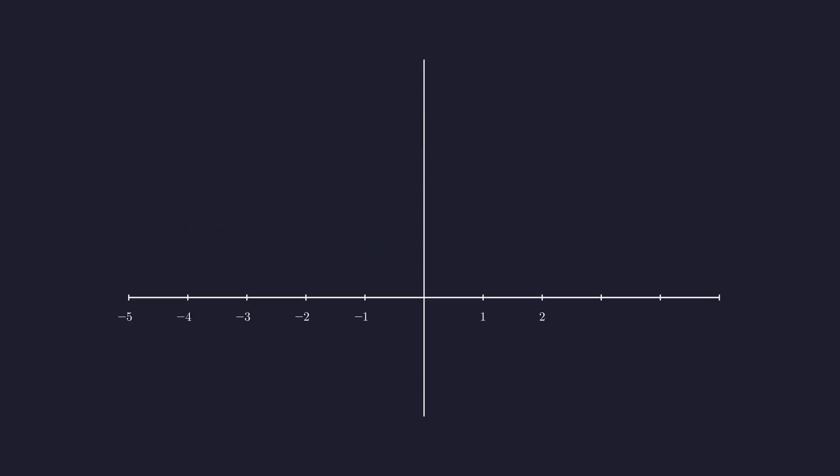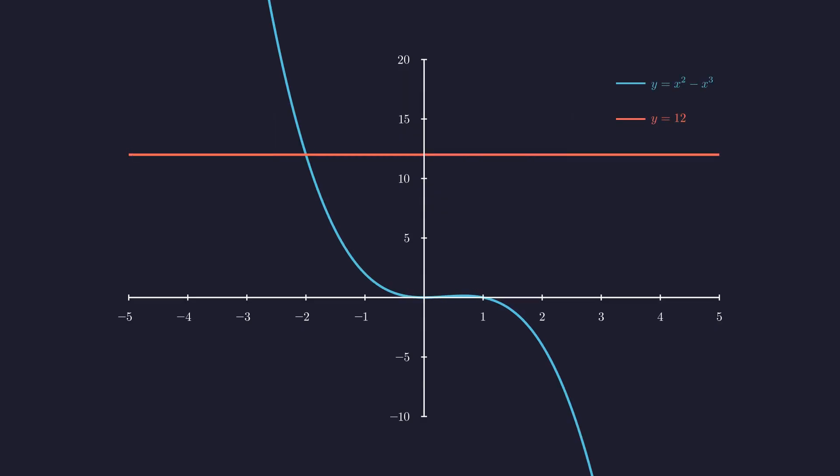The solution to our equation will be the x-coordinate of any point where these two graphs intersect. Plotting them, we can see the two graphs. Visually, it appears there is only one intersection point, right here at x equals negative 2. But a picture isn't a proof — our mission now is to prove this algebraically.